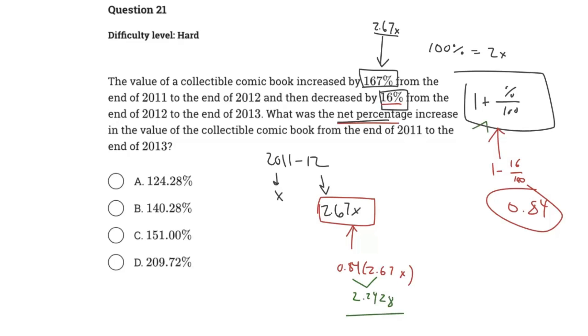So now we can utilize this equation again. We set this equal to 1 plus percentage over 100, and we just solve for that percent change. We can subtract 1 on both sides, then we get 1.24 something. Then we multiply both sides by 100, and so this will ultimately give us around 124 percent.